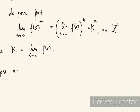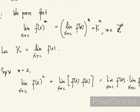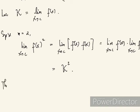The limit of f squared as x approaches c is the same as the limit of f(x) times f(x) as x approaches c. And since we have the limit of a product, the limit of a product says that this is the same as the product of the limits. So this is equal to K times K, which is K squared. So the statement is true for m equals 2.